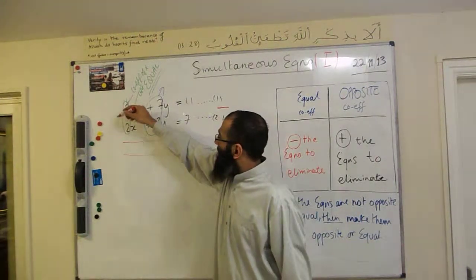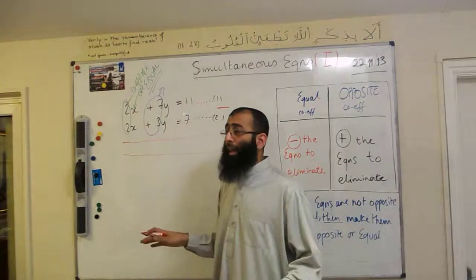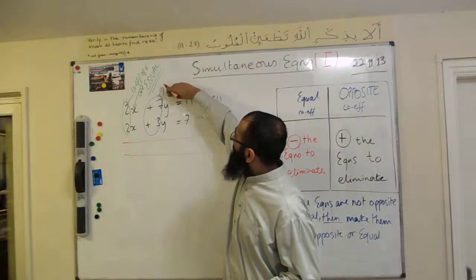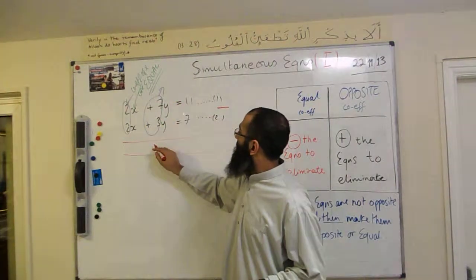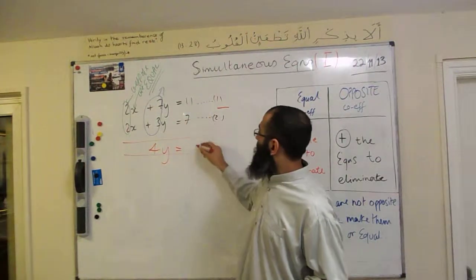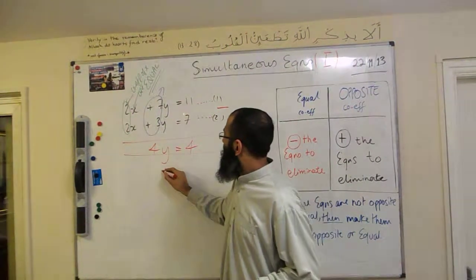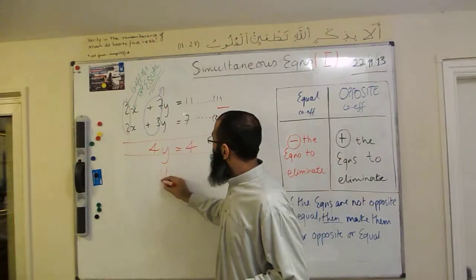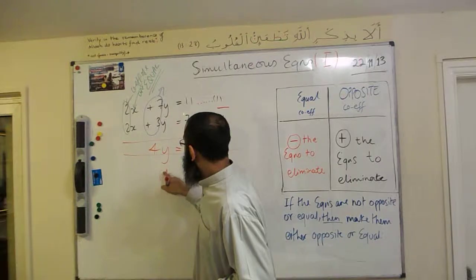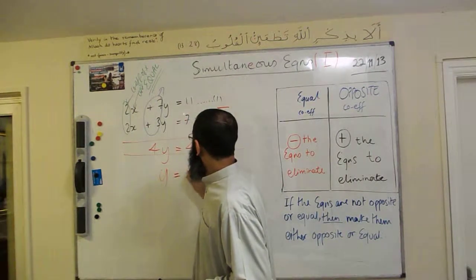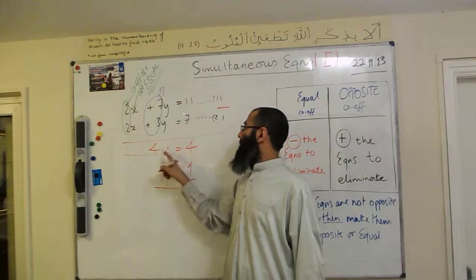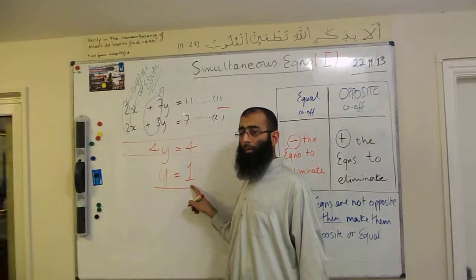Z-shan, 2x minus 2x is? Zero — zero x, so we wouldn't write that down. 7y minus 3y will give us? 4y. And 11 minus 7 will give us? 4. So we have 4y equals 4, and y is equal to 1, because 4 divided by 4 is 1.